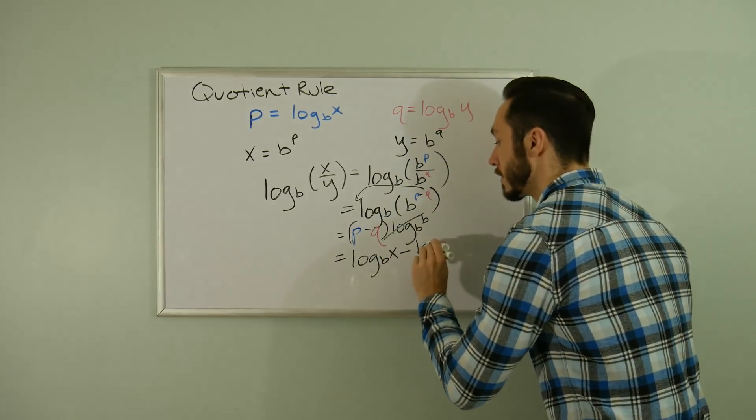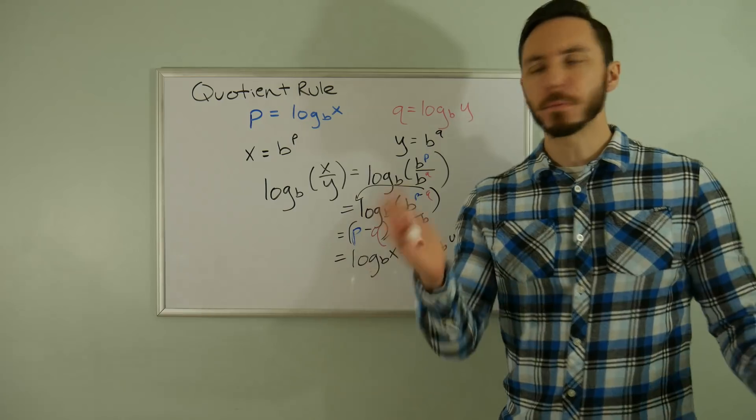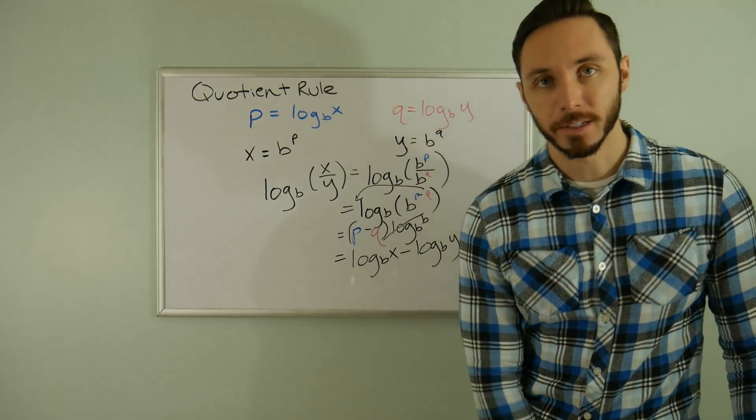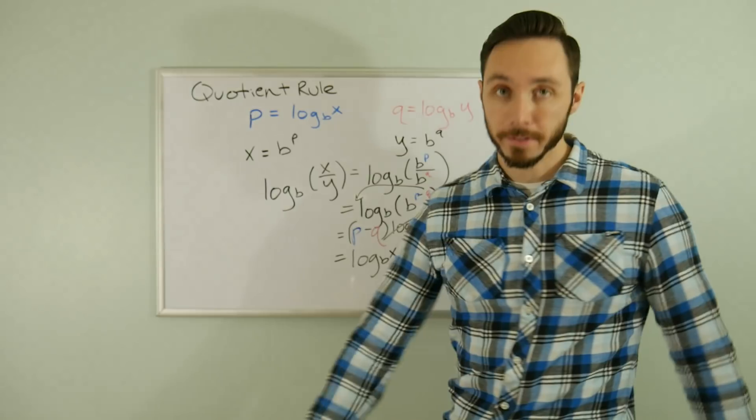Now we can substitute in for P and Q based on what we started with. We have log base B of X minus log base B of Y. Same proof, just with subtraction instead of addition. See you in the next video. Keep mathing and I'll do the same!